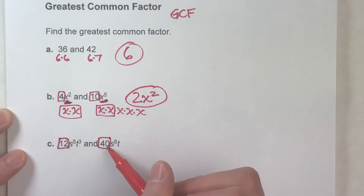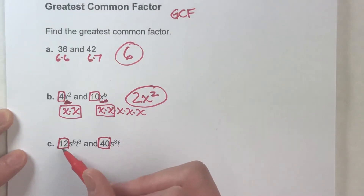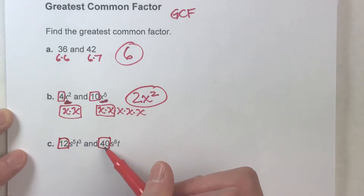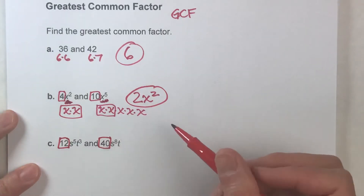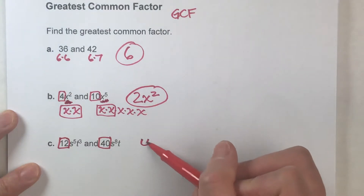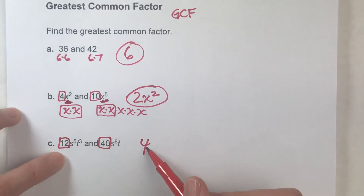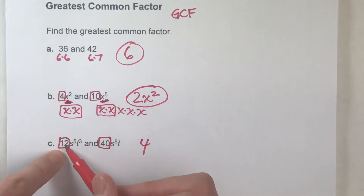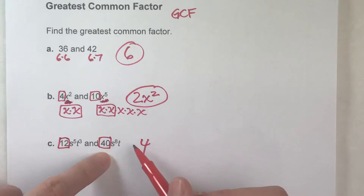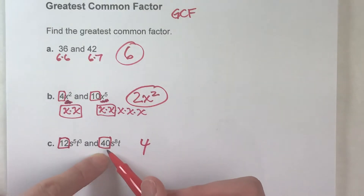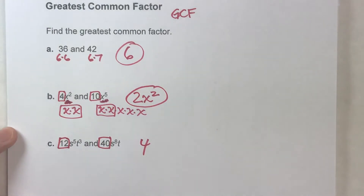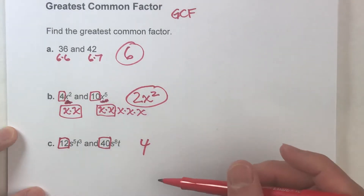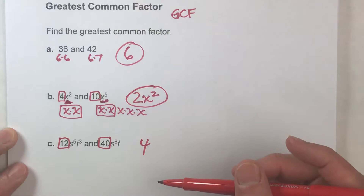What number goes into both 12 and 40? It's going to be 4, because 4 times 3 gets me 12, and 4 times 10 gets me 40, and there's no bigger number than 4 that goes into both of them.